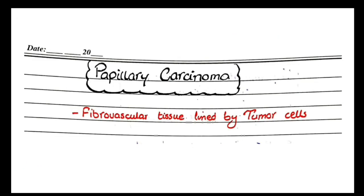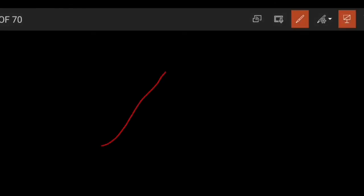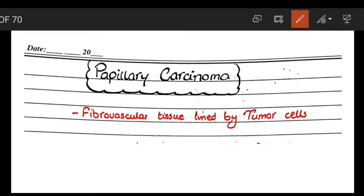Papillary carcinoma: papilla means finger, so you will see fibrovascular tissue lined by tumor cells. There will be fibrous and vascular tissue lined by tumor cells.